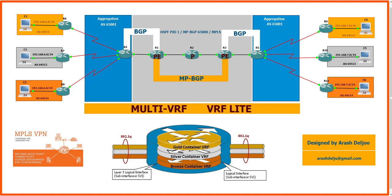We need to configure a routing protocol between R4 and R1. I am going to use BGP on the links between the PE and CE and also between R4 and R1. I will use AS number 65000 in the service provider and AS 65001 in the aggregation layer. On the right side, I am also using BGP between PE and CE. In R4 and R5, we have VRF Lite, but in R1 and R3, we have real VRF with MPLS with route target import and export.